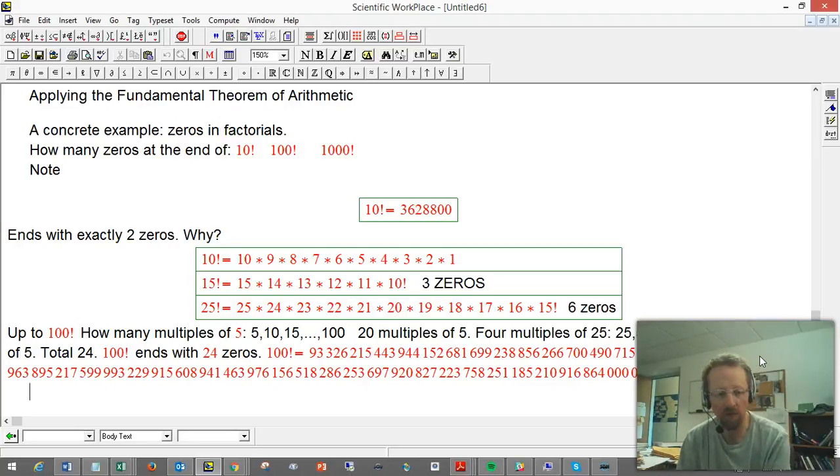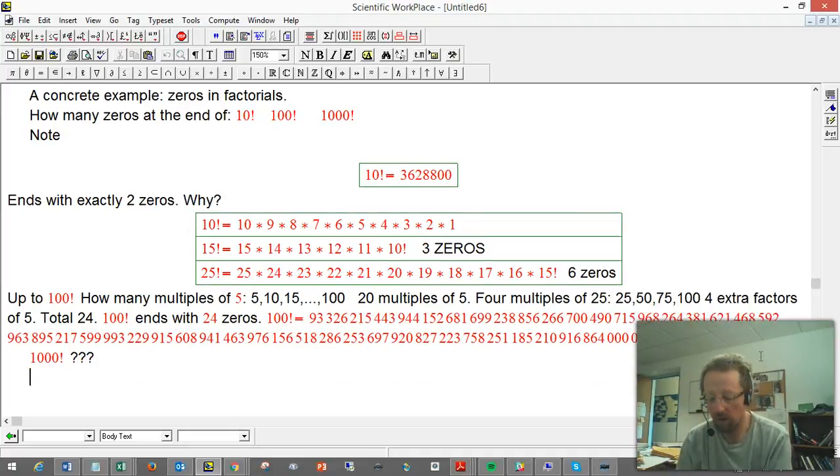So now, what about 1000 factorial? Same idea. So, we've got 5, 10, 15, 20, up to 1000, and I'm just paying attention to the fact that those are multiples of 5. I'm not worrying about any extras quite yet, but there's going to be 1000 over 5, which is 200. 200 multiples of 5.